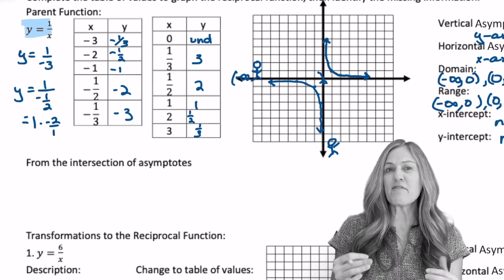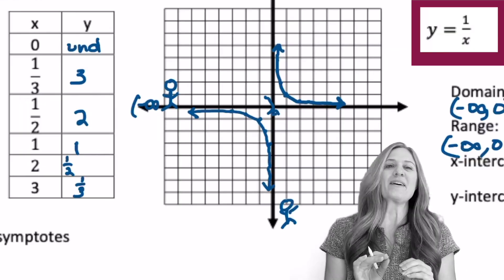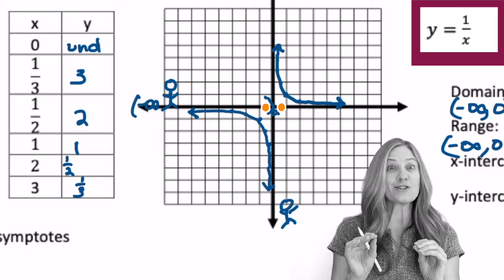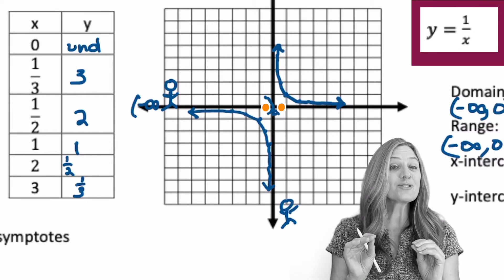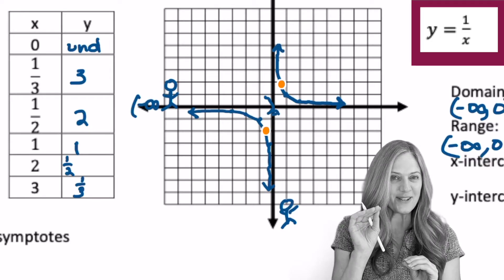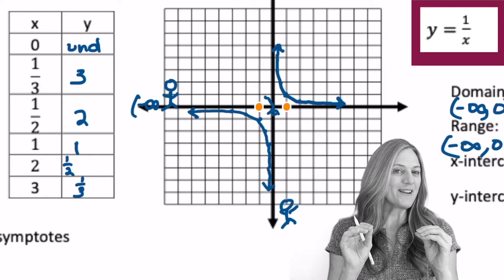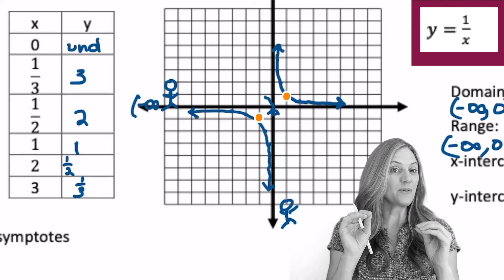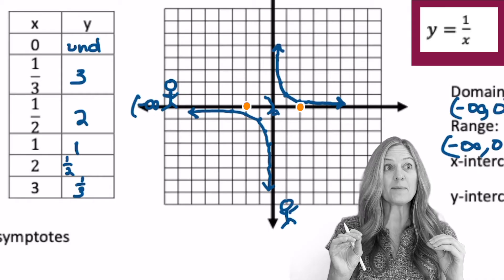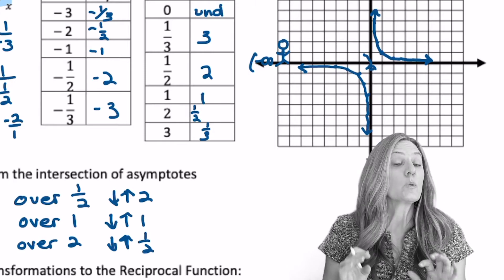Next, do we kind of have pattern points for the reciprocal function? A little bit. Think about it. When we went over a half, what happens? 1 divided by a half is 2. So in the positive first quadrant, I went up 2. And in the third quadrant, I went down 2. And of course, when we go over 1, 1 divided by 1 is 1. 1 divided by negative 1, negative 1. And then last, think about when we go over 2. Well, 1 divided by 2, 1 half. So I'll go up a half and down a half. One more time.